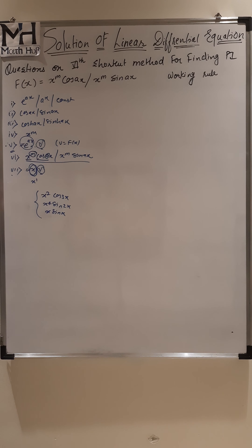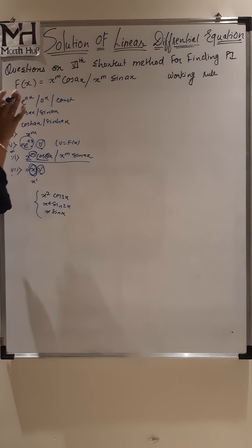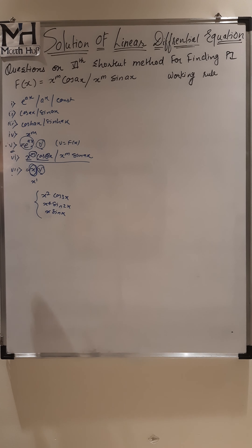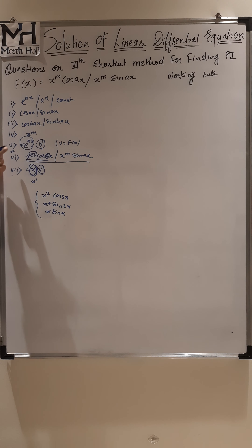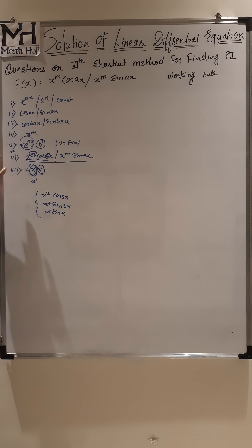The motive behind all these shortcut methods is that you should have clarity about what we are doing in each method. First method: replace D by a. Second and third: replace D^2 by minus a^2 or a^2. Case failures discussed. For x^m we write the inverse function. In this method we replace D by D+a and operate on the function. Students generally make the mistake of mugging up questions instead of methods — mug up the methods and follow them to solve questions.